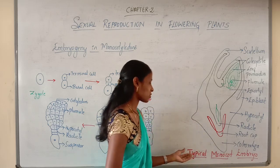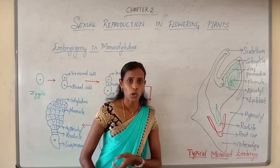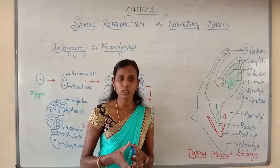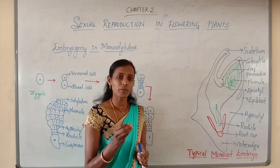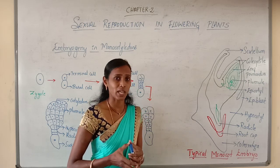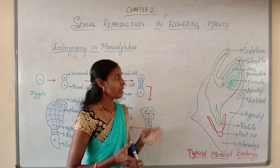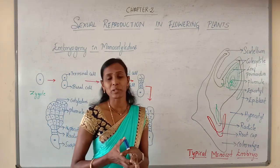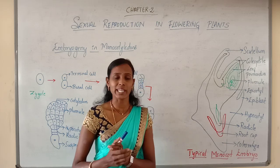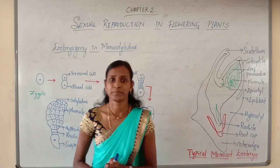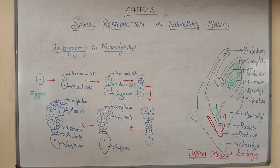That completes the structure of the typical monocot embryo. Both the dicot embryo and monocot embryo are very important topics — you will get either one in your examination. That completes embryogeny in monocotyledons. In the next class, we will discuss the seed. Thank you.